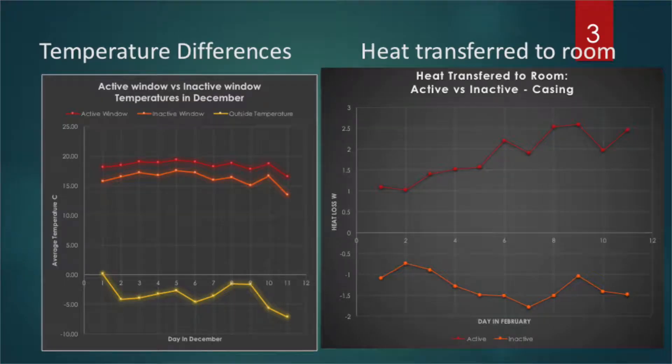First we have a temperature graph showing the difference in temperatures between the windows. The yellow curve represents the outside temperature on that given day, and the active and inactive curves are shown in red and orange respectively.